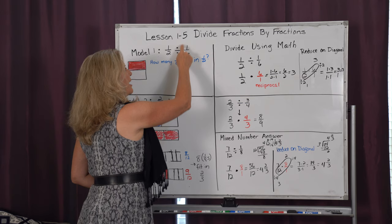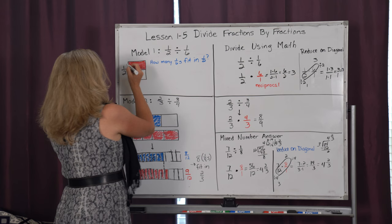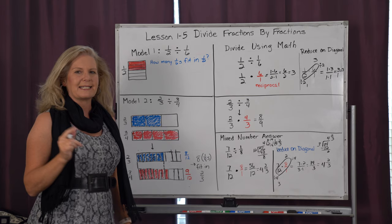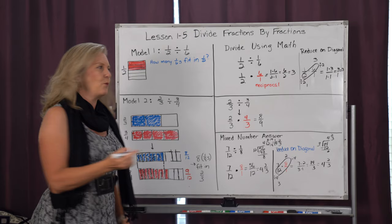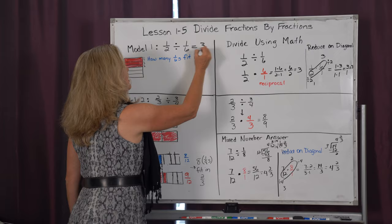Now, to figure out how many one-sixths fit in that one-half, I'm going to divide this rectangle into six even pieces. So when I go to divide it, I now have one, two, three, four, five, six pieces. This is where it's easy for us to see how many one-sixths fit in one-half — because this is one-sixth, this is one-sixth, and this is one-sixth. Therefore, I know that there are three one-sixths that fit in that one-half.